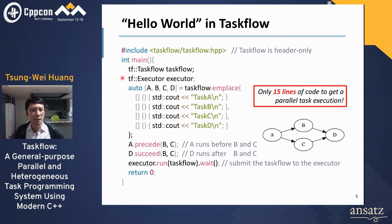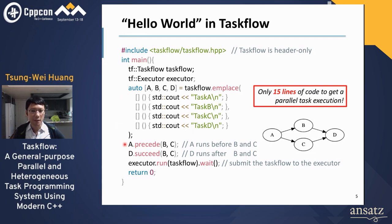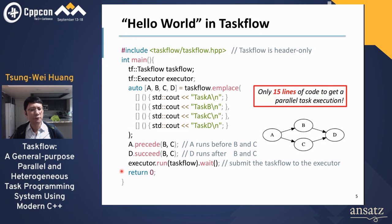You create a Taskflow object to manage a task dependency graph, and then you create an executor that manages a set of worker threads to run task flows. We use the method emplace to create four tasks in terms of C++ lambdas and assign them to A, B, C, D using structured bindings in C++17. To build our dependency, we use precede to force A to run before B and C, and succeed to force D to run after B and C. Finally, we submit this task flow to the executor, and it returns a future where we can wait on it to finish.